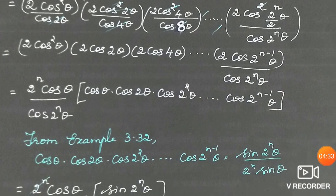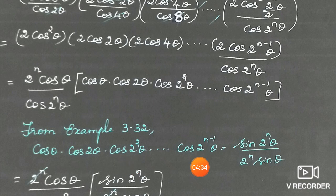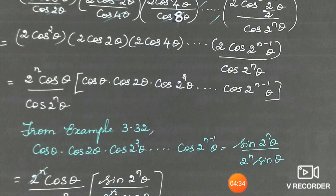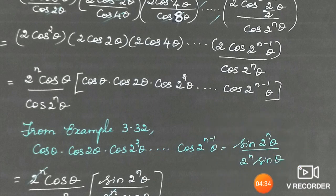Collecting the remaining terms: we use the known result that cosθ·cos2θ·cos4θ·...·cos(2ⁿ⁻¹θ) = sin(2ⁿθ) / (2ⁿ sinθ). The factors of 2 in the numerators — 2 power 1, 2 squared, up to 2 power n — multiply together to give 2ⁿ. So the overall numerator has 2ⁿ times the product of cosines, and denominator has cos(2ⁿθ).